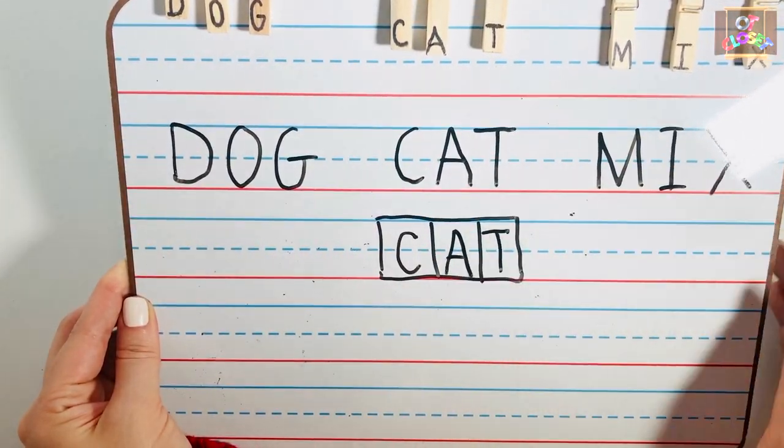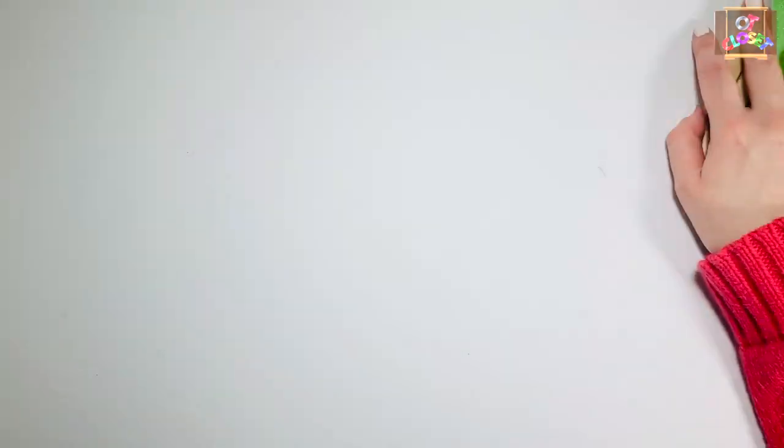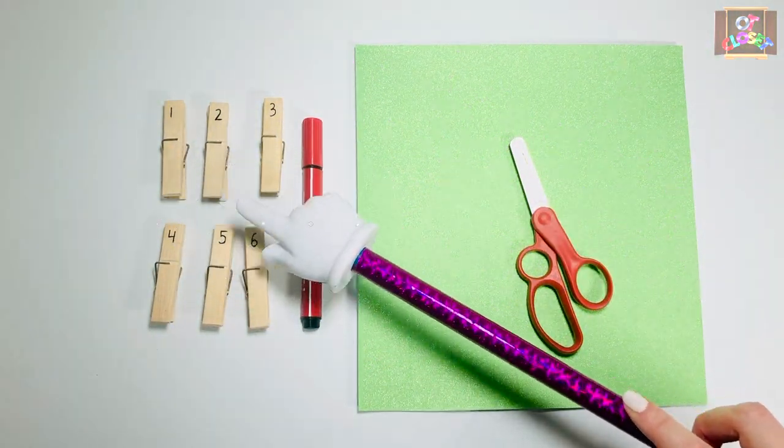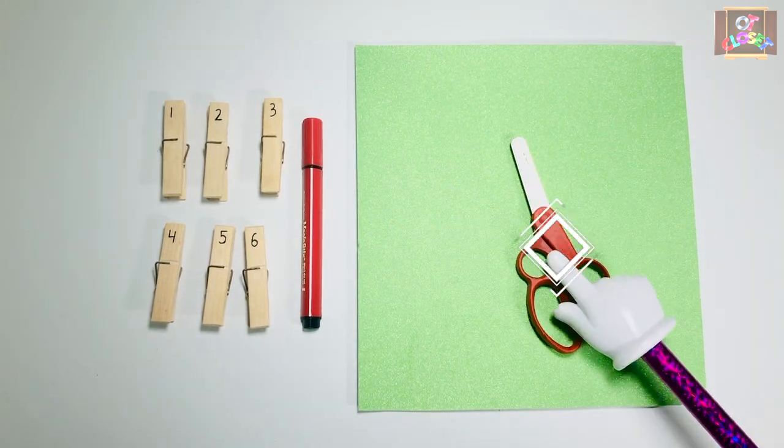Let's make some apple trees for activity number four. You need clothespins, marker, green paper, and scissors.